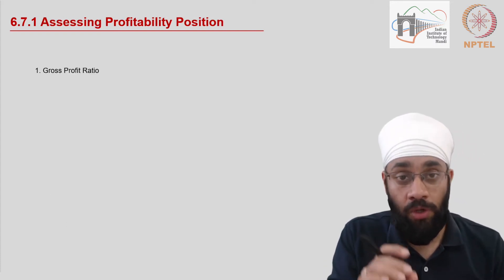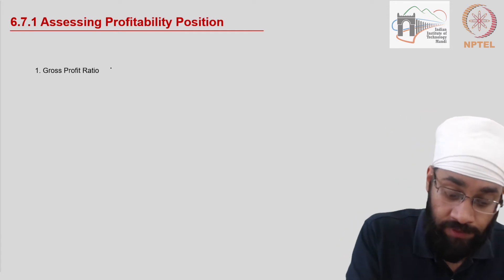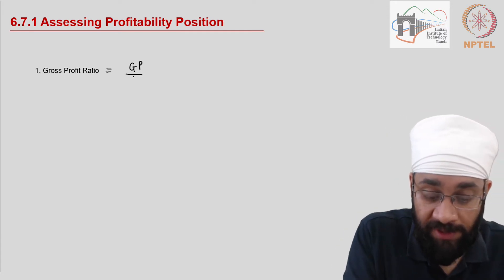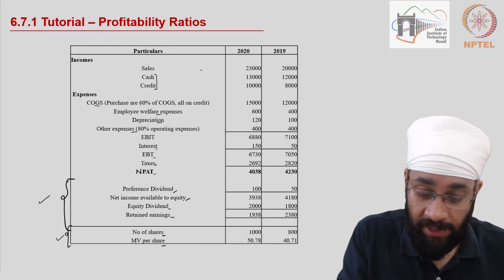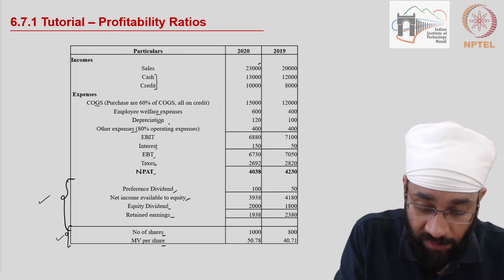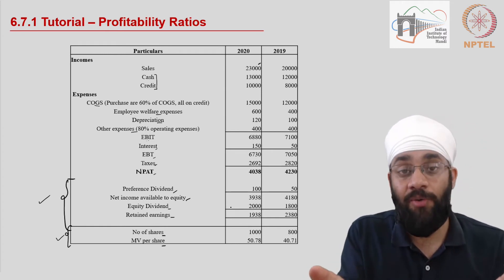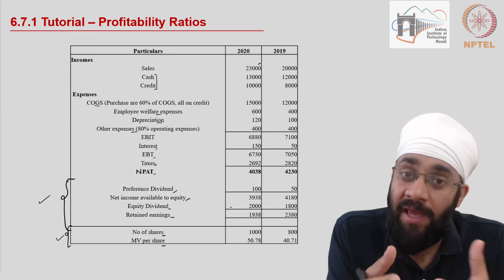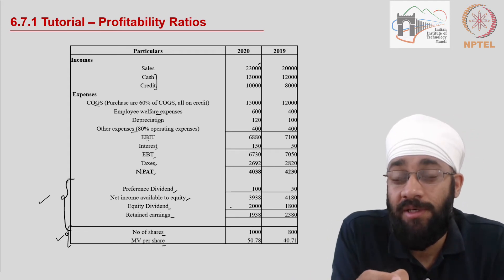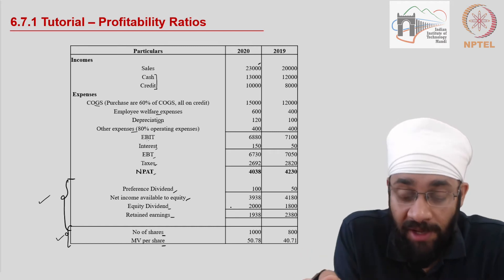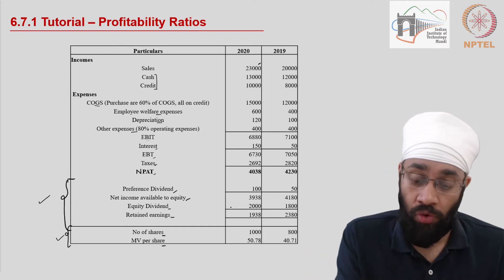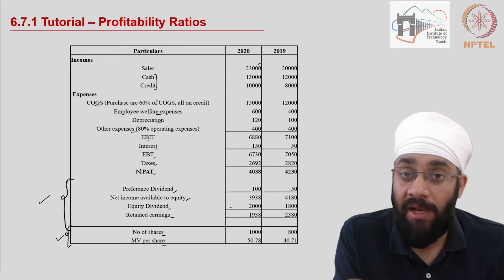We are going to begin with the Gross Profit Ratio, which equals Gross Profit divided by Sales, multiplied by 100. Sales are 23,000. Gross profit has not been directly given — in this statement you only see EBIT, EBT, and Net Profit After Taxes, but not gross profit explicitly.